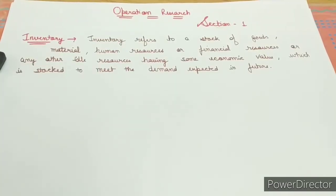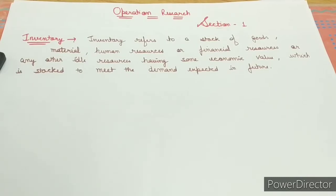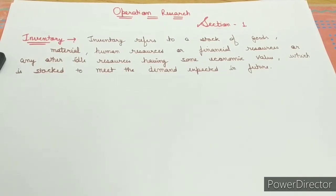So first we are seeing what inventory is — the most basic term of this section. Inventory refers to a stock of goods, material, human resources, and financial resources. Inventory is the stock of goods, the stock of material that we sales and purchase within the organization. Human resources means labor, and financial resources means cash — cash in hand or cash in other forms, or any other ideal resources having some economic value.